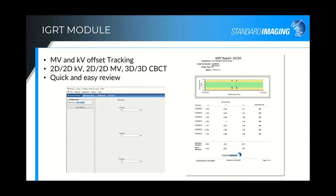The IGRT module is more of a data storage, warehousing, and trending tool than a specific test. We utilize a phantom similar to our Mimi phantom, which checks perpendicularity and coincidence of MV and KV imagers, and allows couch offset checks. The imaging performs 2D/2D matching with KV and MV, and 3D/3D matching with cone beam CT. You can enter the found X, Y, and Z deviations for a given day, then print a report showing deviations on a trend line or in tabular format.